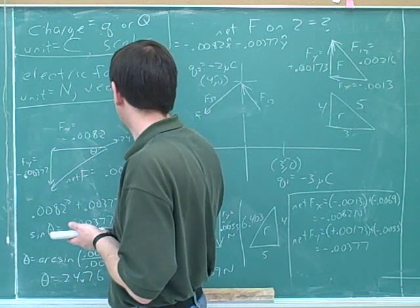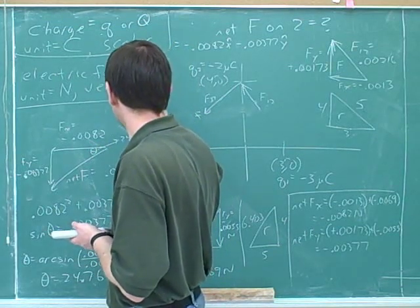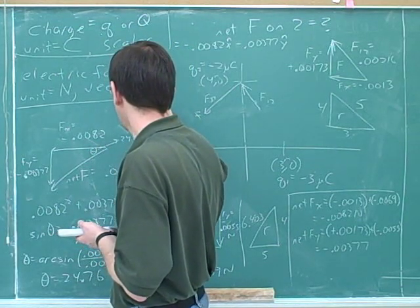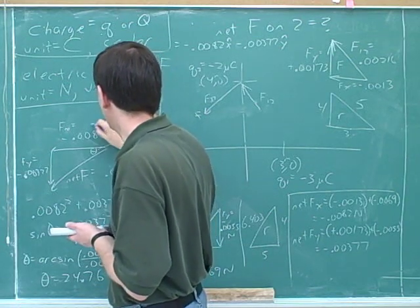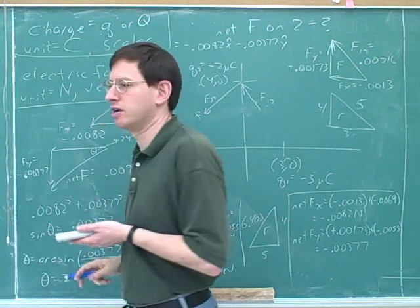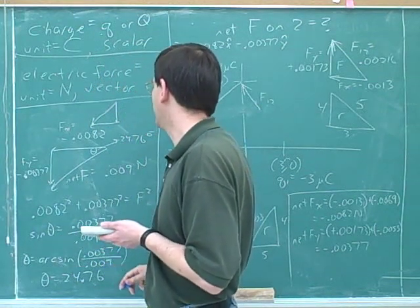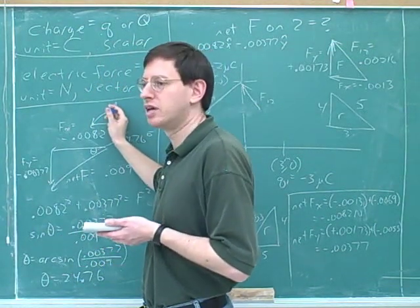Remember that we could have drawn a different triangle that looked like this. We could have drawn the y component first and then the x component. Then the overall vector would have looked like this. Then we would have ended up figuring out the angle with the vertical.